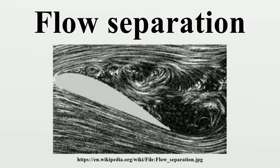Internal separation: Boundary layer separation can also occur for internal flows, resulting from causes such as a rapidly expanding duct or pipe. Separation occurs due to an adverse pressure gradient encountered as the flow expands, causing an extended region of separated flow. The part of the flow that separates the recirculating flow and the flow through the central region of the duct is called the dividing streamline. The point where the dividing streamline attaches to the wall again is called the reattachment point, after which the flow eventually achieves an equilibrium state with no reverse flow.